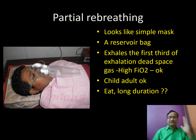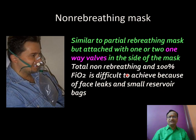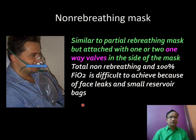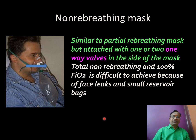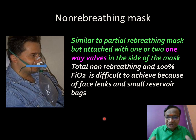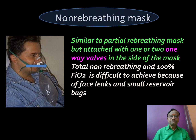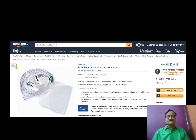The non-rebreathing mask is the most important step up. Like the partial rebreathing mask but with two one-way valves: you inhale from the reservoir only, and the side valves allow exhalation but prevent room air entrainment. With a good airtight fit and adequate flow, close to 100% FIO2 is achievable. It is inexpensive — currently about 1300 rupees.